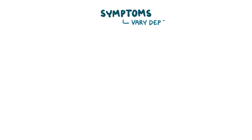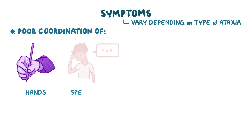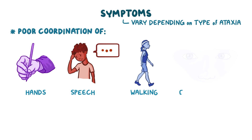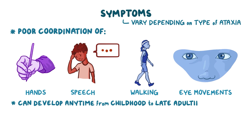Symptoms vary depending on the type of spinocerebellar ataxia, but usually include poor coordination of hands, speech, walking, and eye movements. These symptoms may develop any time from childhood to late adulthood.